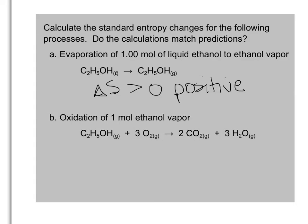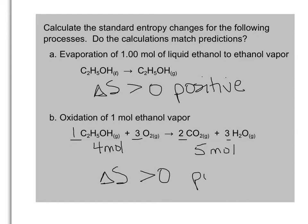Let's take a look at our second system. This is a combustion reaction, and we have all gases here. When we have all gases, we have to look at the change in the moles of gases from reactants to products. On the reactant side we have 1 mole, 1 mole, and 3 moles — so 4 moles of gas total. On the product side we have 2 moles and 3 moles — so 5 moles of gas. We've increased the number of gas molecules, which tells us the change in entropy is also going to be greater than zero, or positive.